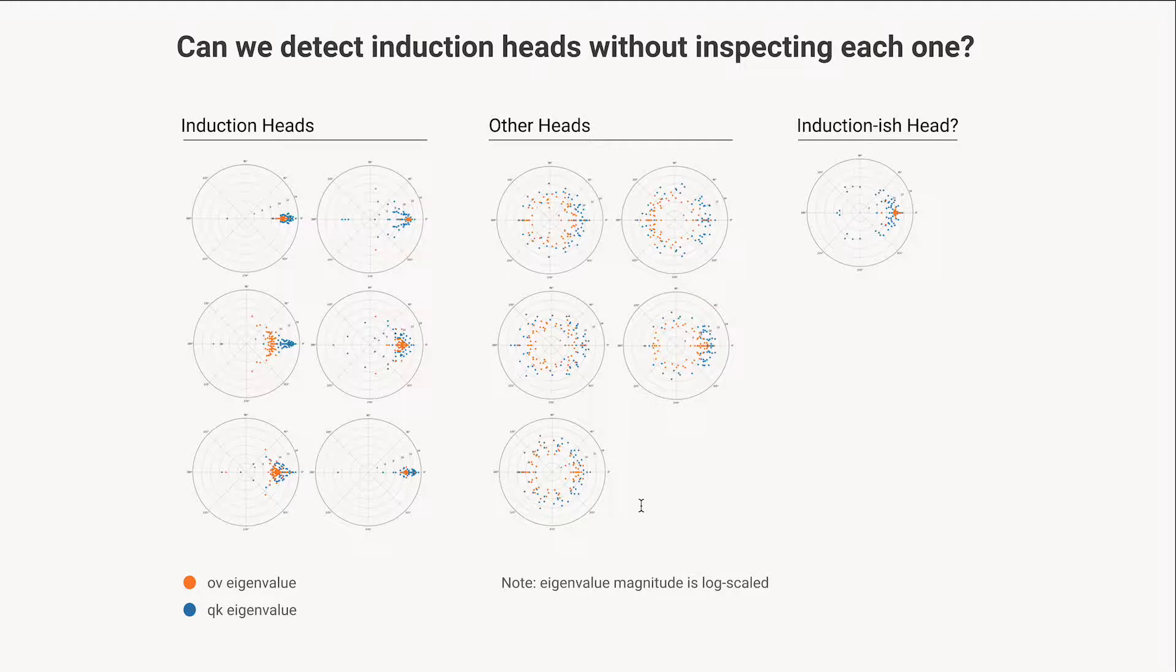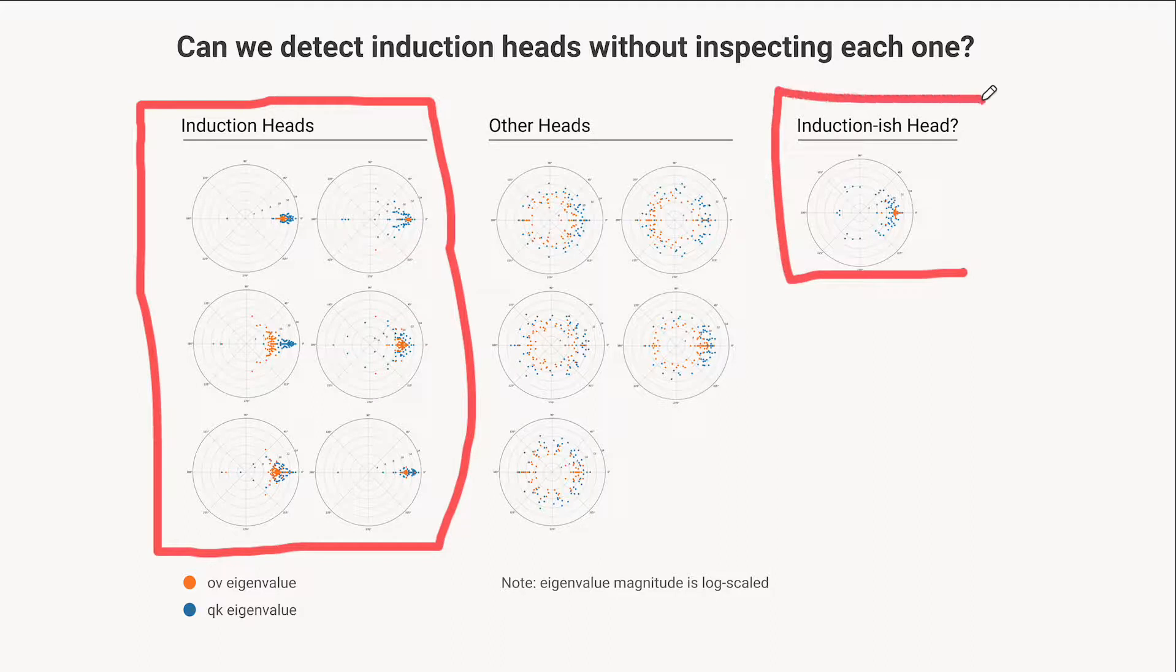If the QK eigenvalues are positive, that's a very strong sign that we're doing something like induction. And the OV eigenvalues mean that we're doing copying. So if both are positive, that's a very strong signal that we're seeing induction. And we can see that there's six heads that are quite clearly doing this, and then another one that is maybe doing this a little bit, but it's a bit messier.